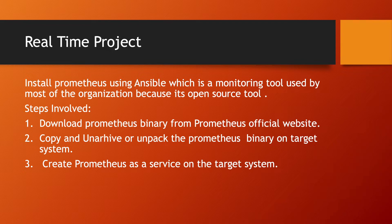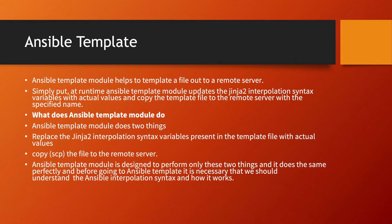So what kind of modules are involved in this project? I will be explaining all those modules and then we will go and implement it practically. One of the most important modules involved in doing this project is the Ansible template module. The Ansible template module helps to template a file out to a remote server. It updates the Jinja2 interpolation syntax variables with actual values and copies the template file to the remote server with the specified name.